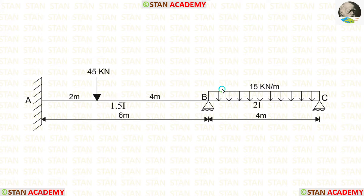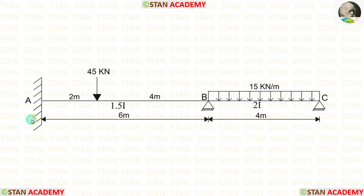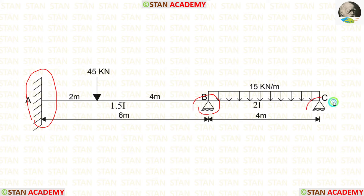In span BC, we have a UDL of 15 kN per meter acting for the full span. At point A, we have a fixed support. At points B and C, we have hinged supports.